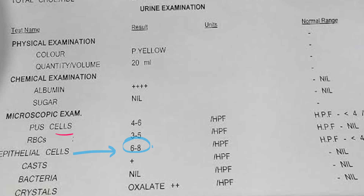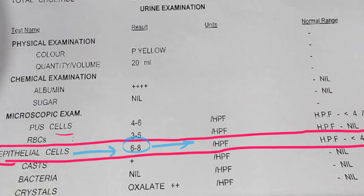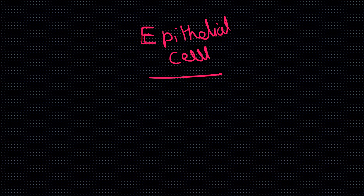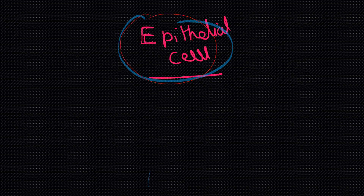So what are these epithelial cells? Epithelial cells are the lining cells — the cells which line a cavity. In the context of the urine routine microscopy report, these are the cells that line the urogenital tract: the tract through which urine is generated and passes out, including the kidney, ureter, bladder, and urethra.